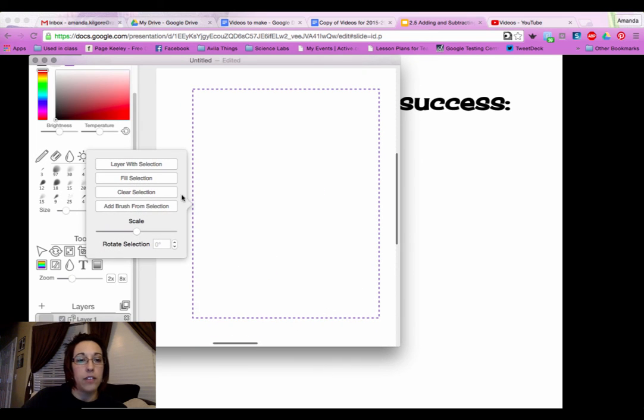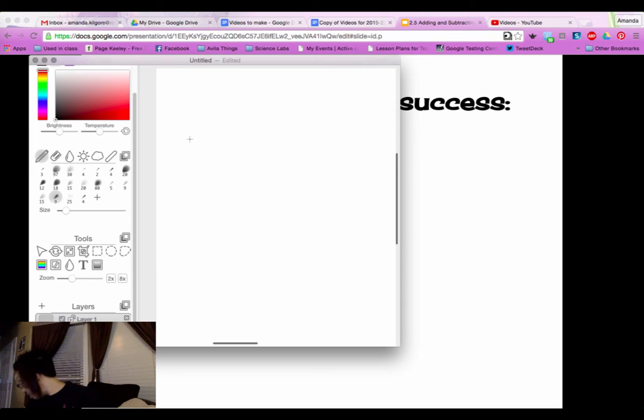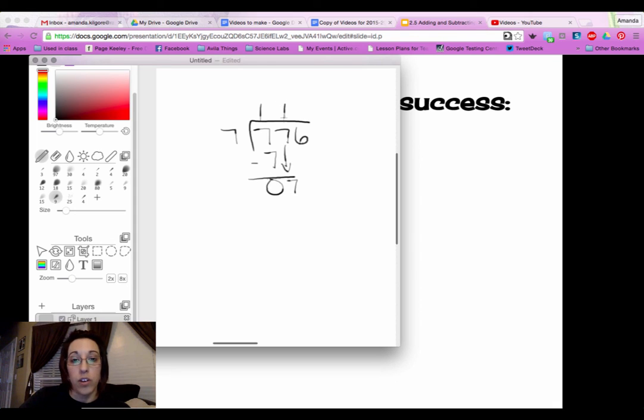Let's do one last problem together. Let's do 776 divided by 7. Well, 7 will go into 7 one time. Bring the 7 down. 7 will go into that 7 one time as well. Subtract, and I get a 0. Bring my 6 down. 7 will go into 6, 0 times. And that gives me 6 left over, which means a remainder of 6.